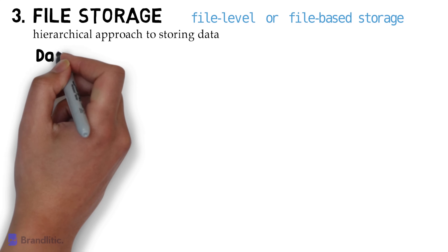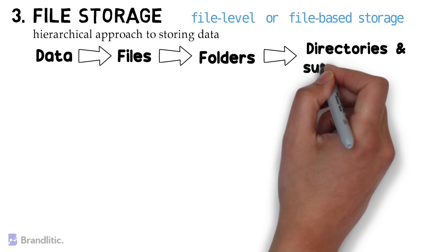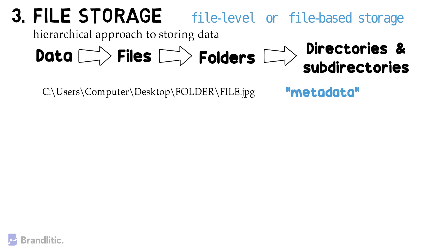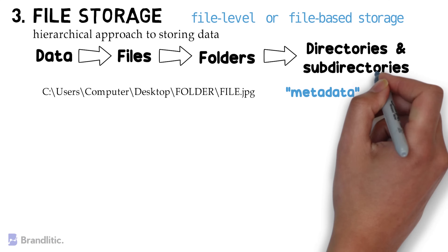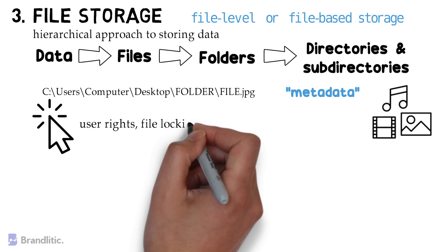This process involves storing data in files, which are then arranged in folders and organized into directories and subdirectories. For users and applications to locate and retrieve a file, they will need to know the pathway from the directory all the way through to the folder and the specific file. This information is included in a set amount of metadata that is attached to the file. File storage has a range of capabilities and can store almost any type of data. You can store a range of complex files and it's fairly quick to navigate. It is also very easy to configure, wherein you can control access to files with user rights, file locking, and other controls.